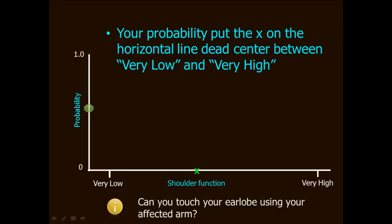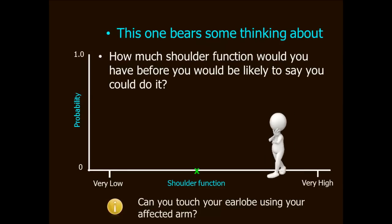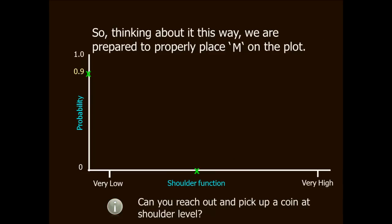But where did you put the x on the probability axis? A lot of people when they do this exercise typically put the x at the halfway point, around 0.5. But this one takes a little extra thought. Remember the item asks: can you touch your earlobe using your affected arm? Now how hard is that? Not very hard at all. So even if you only have a medium amount of shoulder function, you still are pretty likely to say that you'd be able to do it.